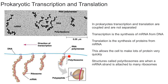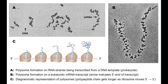Remember that prokaryotes can translate the mRNA while it is being transcribed. Both prokaryotes and eukaryotes can transcribe a single mRNA strand multiple times, with many ribosomes forming a string on the mRNA. Such a string of ribosomes is called polyribosomes or polysomes, which greatly increases the speed and efficiency of translation.